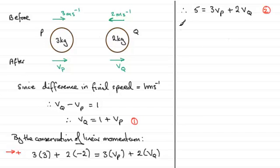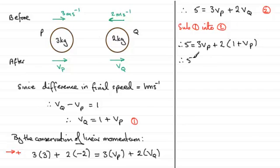What we'll do is sub equation 1 into equation 2. So what's that going to give us? Well we'll therefore have 5 equals 3VP plus 2 lots of VQ which is now 1 plus VP. And if we expand the bracket we've got 5 equals 3VP plus 2 plus 2VP.